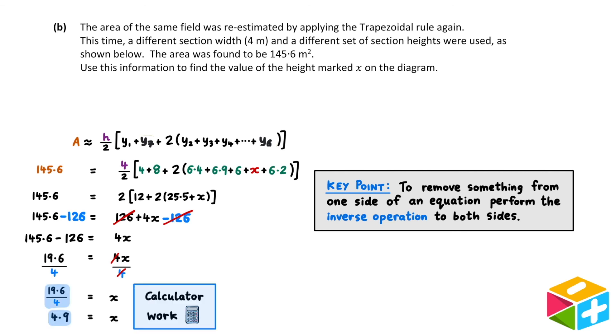From here, all we have to do is type 19.6 divided by 4 into our calculator. The unit here is meters, so our final answer is that x is equal to 4.9 meters.